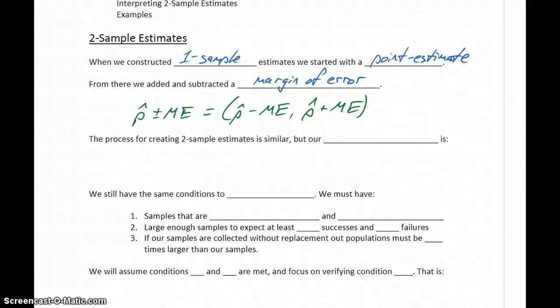In this section, we want to start talking about how we do the same thing but with two sample estimates. The process for creating a two sample estimate is similar. Really, the only thing that changes is our point estimate. Since we're dealing with two samples, instead of our sample proportion being just p-hat, we'll have two different sample proportions, which we can refer to as p1 and p2. More specifically, our point estimate will be the difference of those two values.